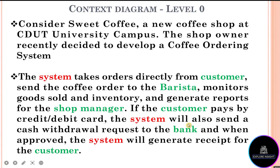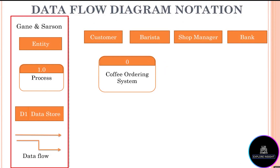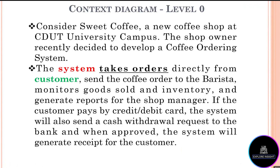So now we have another external entity — the bank. So how many entities do we have? One, two, three, four — we have four external entities. Since the customer already appears earlier, we don't add it again. From that case, we could identify four external entities: customer, barista, shop manager, and bank. Note that the context diagram has only one process, which is the coffee ordering system with the reference tag zero. So let's go ahead to draw each information.